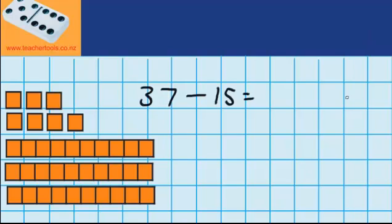To start with I'm going to take away some ones. I can see here that I've got 7 ones, and I need to take away 5 ones. So I'm thinking to myself, what's 7 minus 5? Well, I think that's 2, but I'm going to check that on the materials.